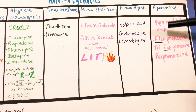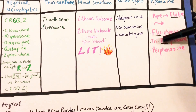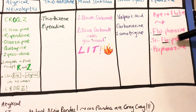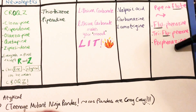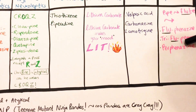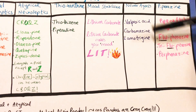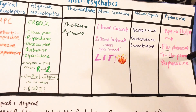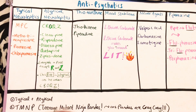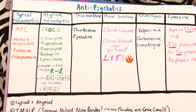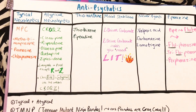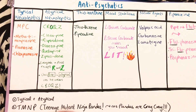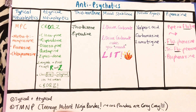So the piperazine examples are fluphenazine and trifluoperazine — and perphenazine, but I'm mainly focusing on fluphenazine and trifluoperazine. I hope this was helpful. Thank you for watching, please like and subscribe — bye!